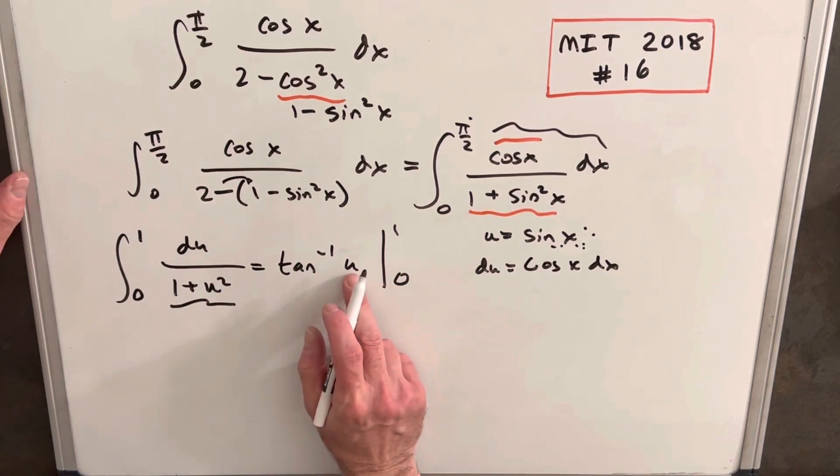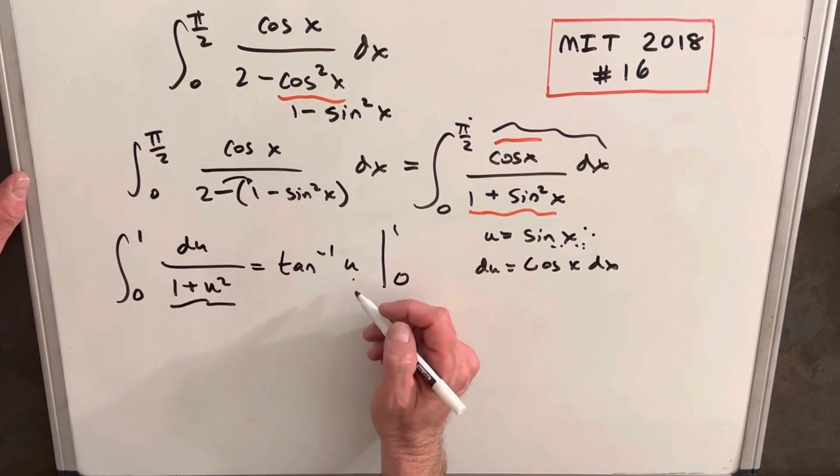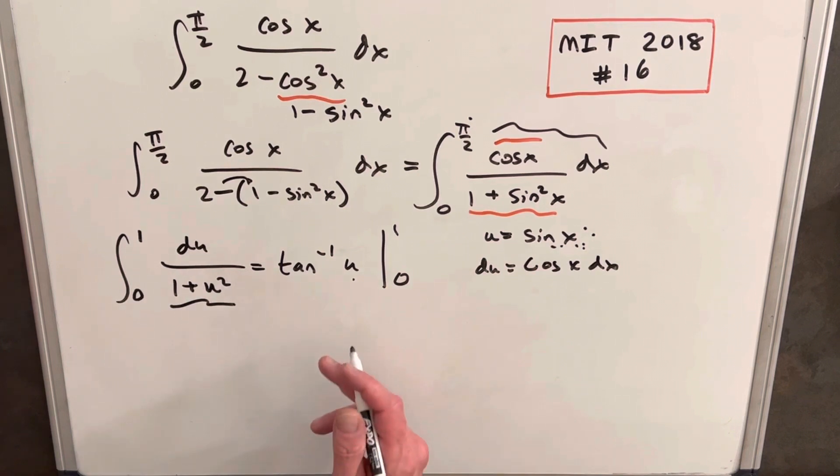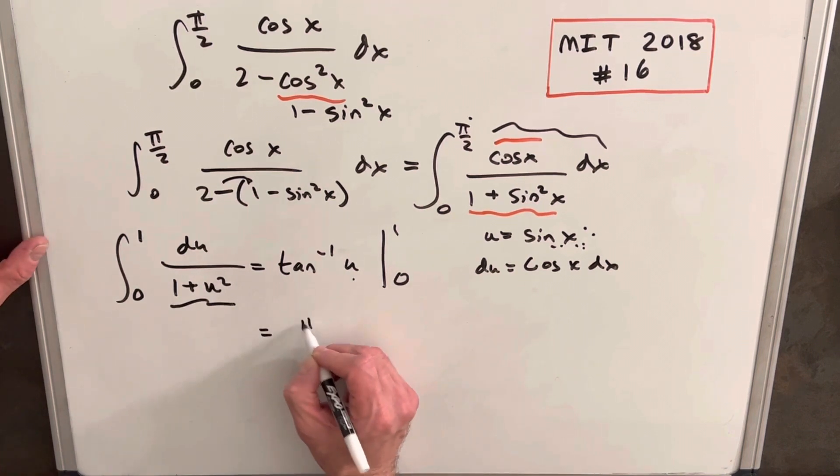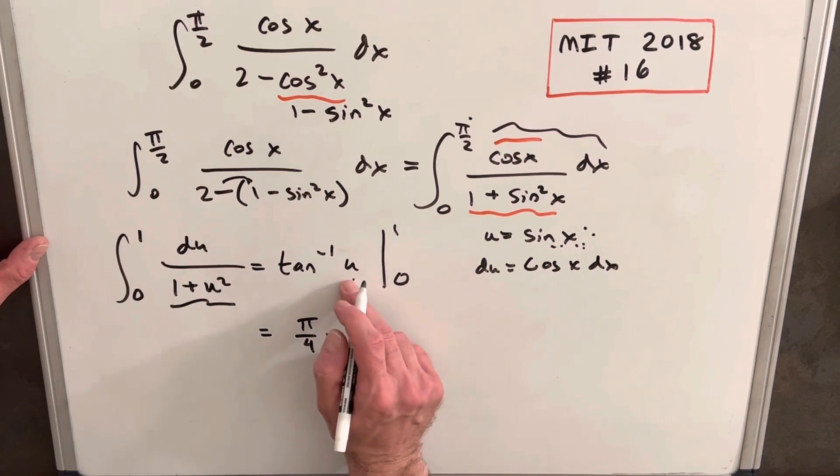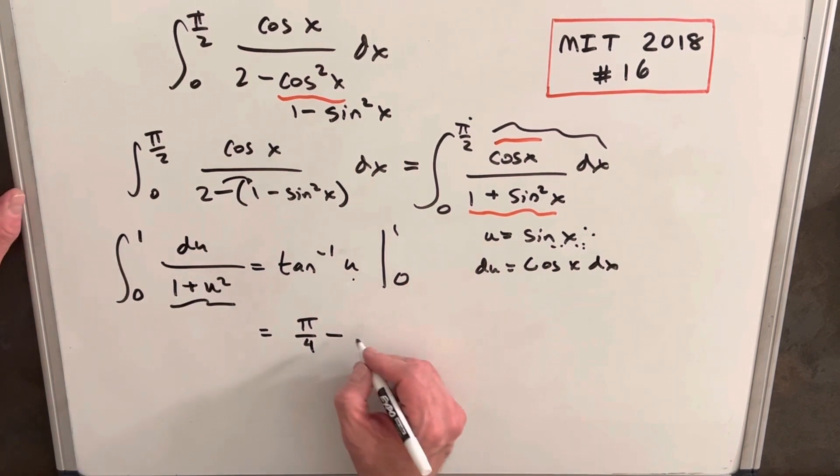Then evaluating arctan at 1, that's going to be pi over 4. At pi over 4, sine is square root of 2 over 2, cosine is square root of 2 over 2. So we're just going to have pi over 4 for our first value, and then minus, putting 0 in, tan inverse at 0, that happens at 0.